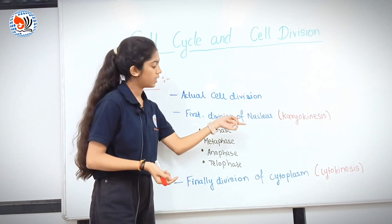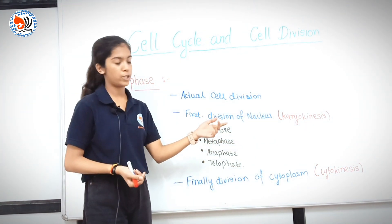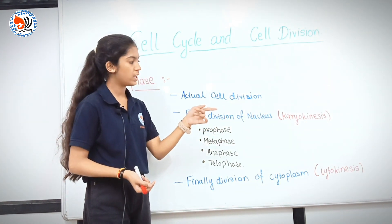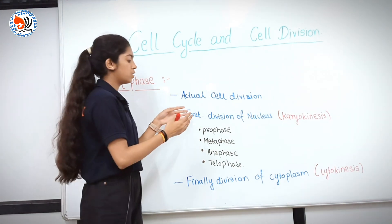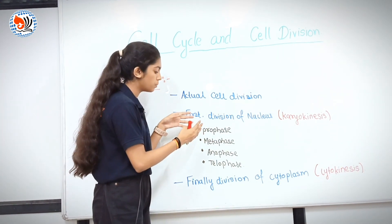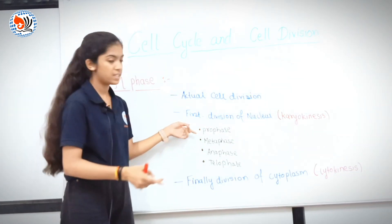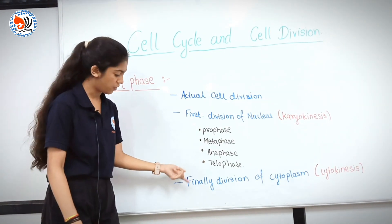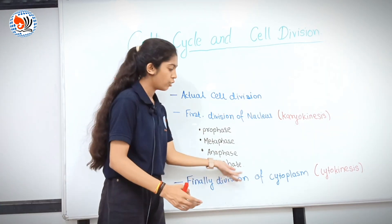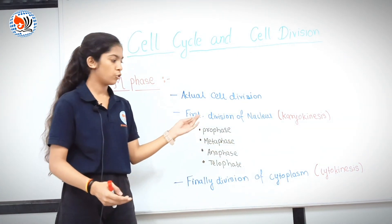Division of nucleus is known as karyokinesis. Division of cytoplasm is known as cytokinesis. Division of nucleus is divided into four phases. First is prophase, second is metaphase, third is anaphase, and finally telophase.